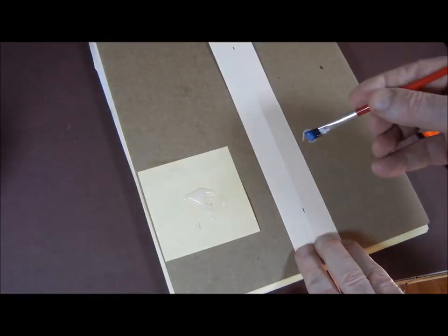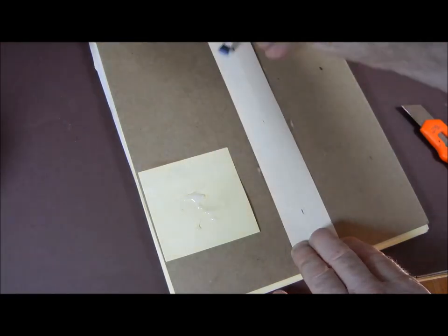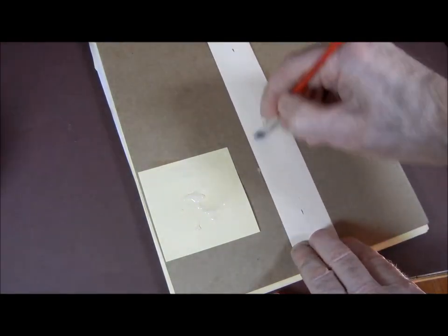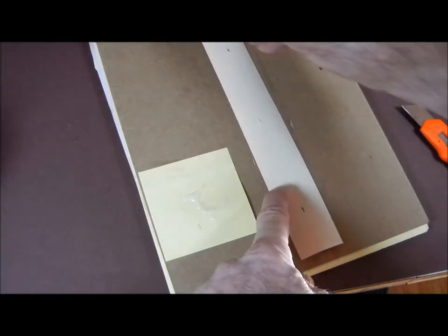Now I take a brush and the tacky glue and just brush along the surface of the fly leaf paper seam cover until it's fully covered. And when I've got every bit of it covered...